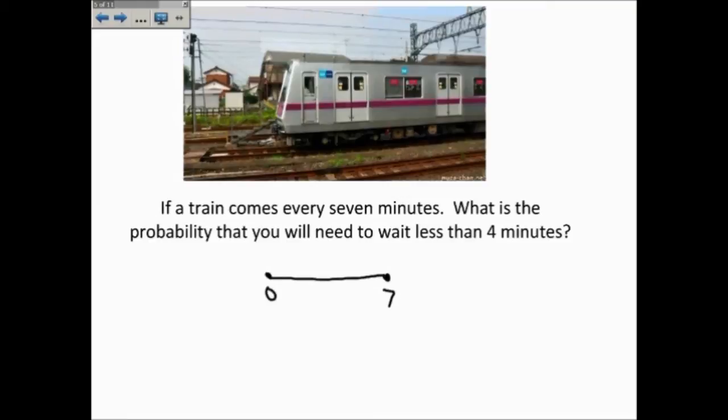waiting less than four minutes, so here's four, and I'm waiting less than four minutes. The length of this segment is four out of the possible wait, which is out of seven. So the probability that you will need to wait less than four minutes is four-sevenths.